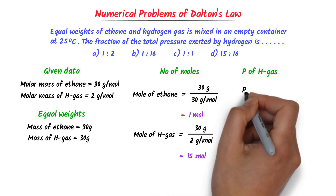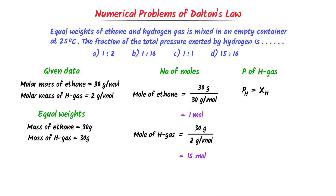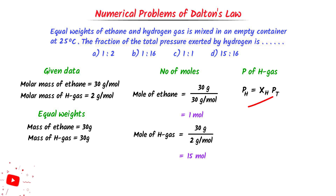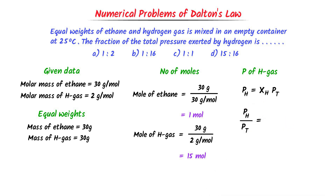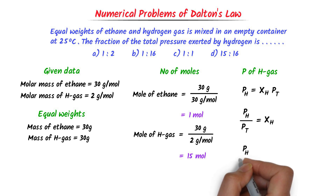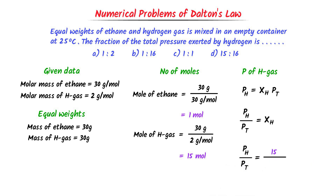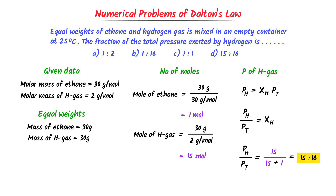Now, partial pressure of hydrogen gas is equal to the mole fraction of hydrogen gas times total pressure. In the question, we are asked to find the fraction of hydrogen's pressure to the total pressure, so: P_H₂ / Pt = mole fraction of H₂ = 15 / (15 + 1) = 15/16. Hence, the fraction of the pressure of hydrogen gas to the total pressure is 15 : 16. This is the correct answer — note down this important numerical problem.